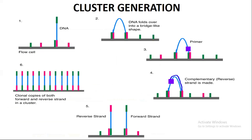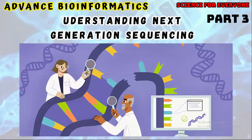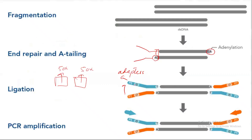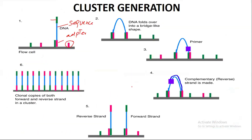Looking at this explanatory slide: on the surface of the flow cell are short nucleotide strands. This blue region is our gene of interest — the sequence we want to find the order of nucleotides for. The green and pink colors are the adapters. As shown in the previous video, our gene of interest has adapters attached to it, and these adapters bind to the nucleotide probe sequences present on the surface of the flow cell.